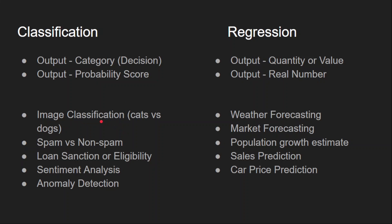These are some examples of classification problems. Image classification is a broad category — you can have different types of problems within it, such as cats versus dogs or identifying any animal. Detecting diseases in chest X-ray images is another type of image classification problem. Coming to text data, we have spam versus non-spam for email classification.